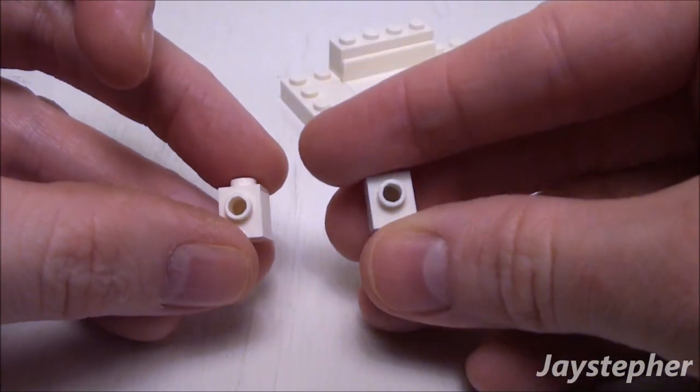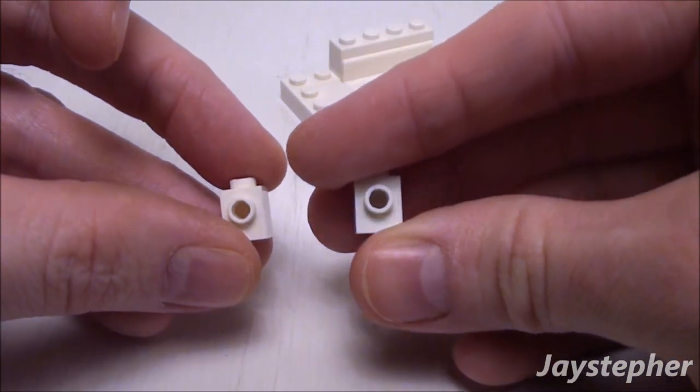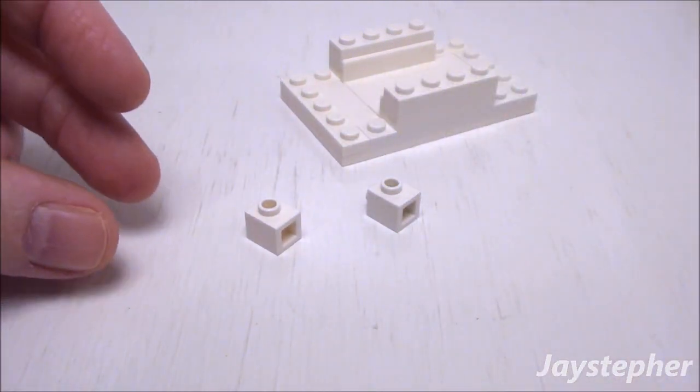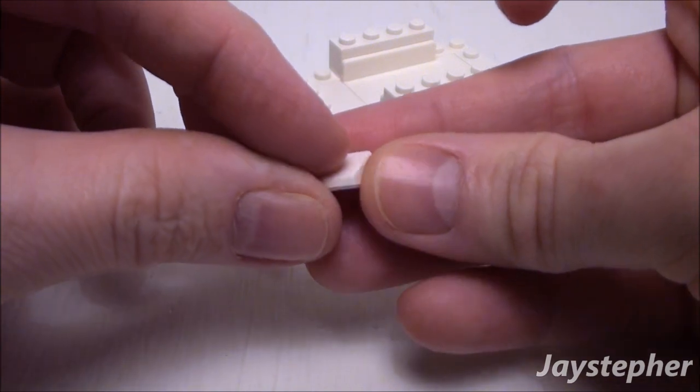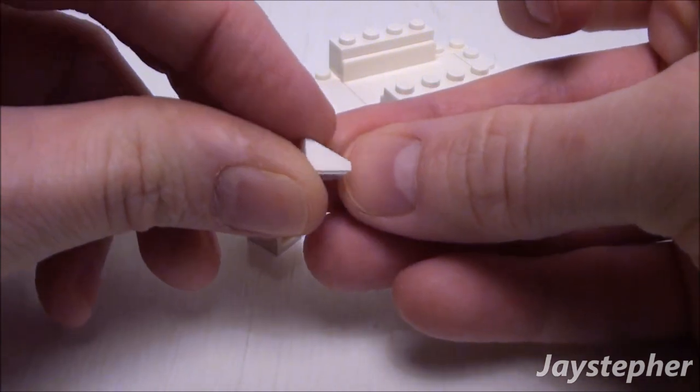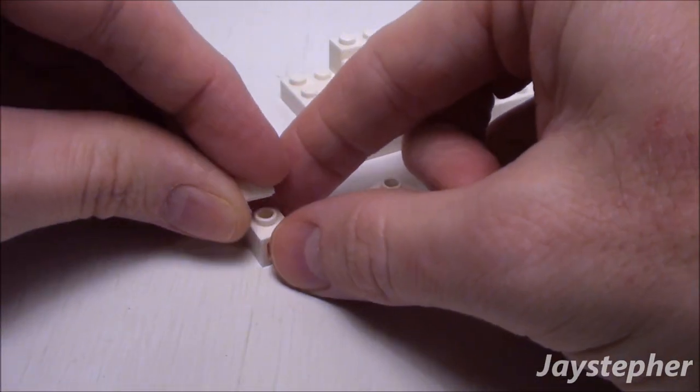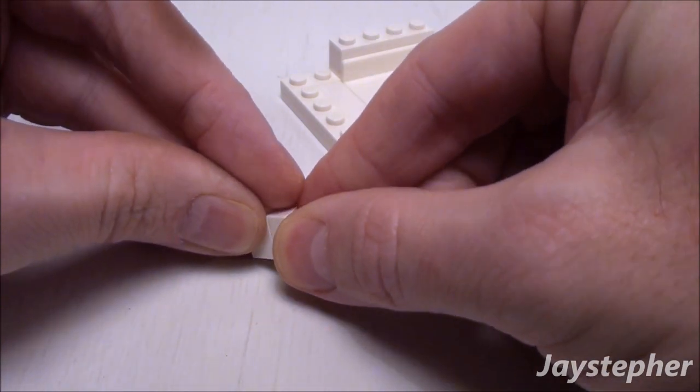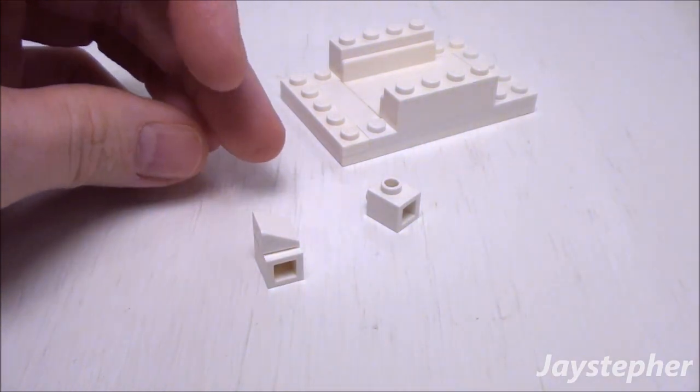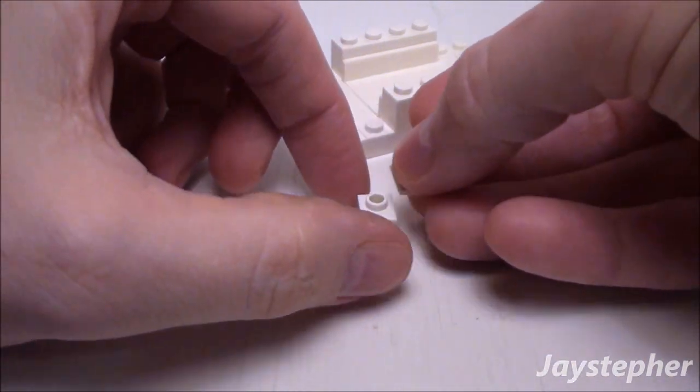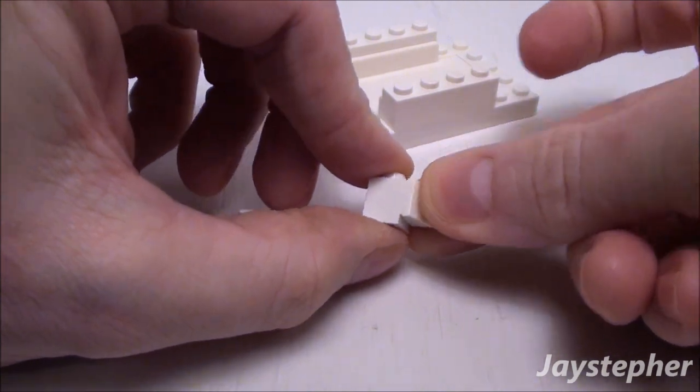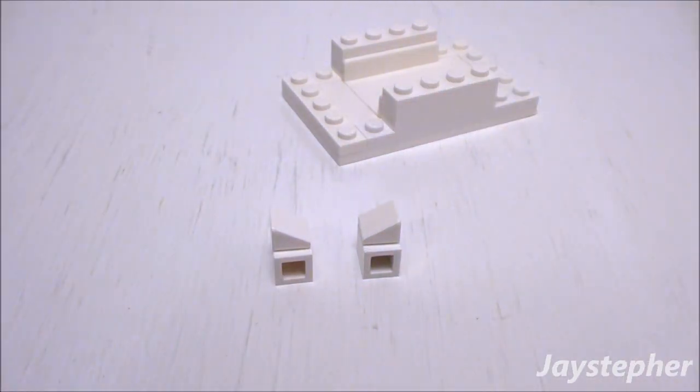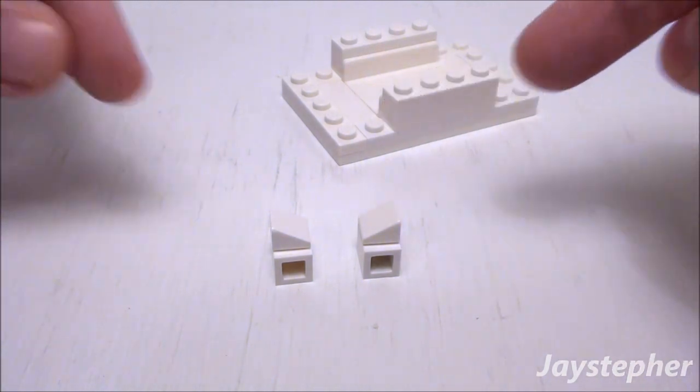Now take two 1 by 1 bricks with one knob and two 1 by 1 slopes. Let's place one slope on the brick with knob like so, and another slope on the other 1 by 1 brick with knob, where the angle faces inward like so.